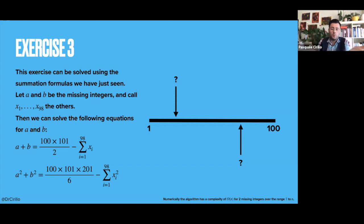Now, this problem can be solved in different ways, we can think also of solving that numerically. And in this way, we have a very simple algorithm to find out what are the two integers, what are a and b.